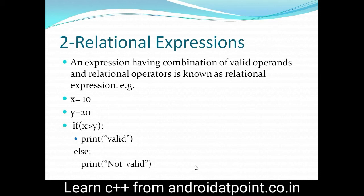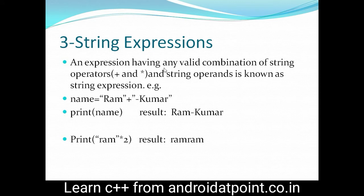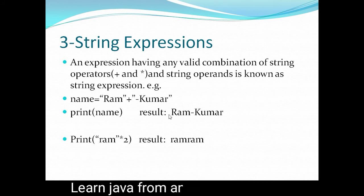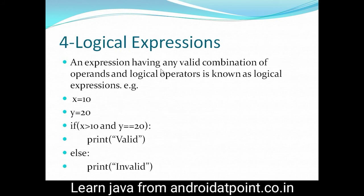so it prints the result as 'not valid'. String expression: an expression having any valid combination of string operators — plus and star are the string operators — and string operands is known as a string expression. Look here, 'ram' is the string, and then plus is the string operator which concatenates the two strings, and the second string is 'hyphen kumar'. After concatenating, 'ram-kumar' is assigned into the name variable. With the help of the print function, print the value of name as 'ram-kumar'. The second statement, ram star two, simply prints 'ram' two times — result is 'ram ram'.